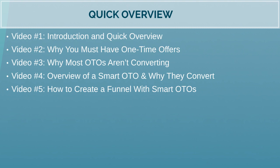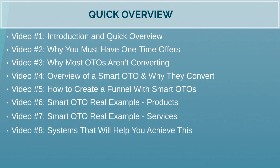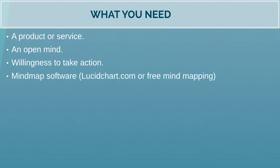Video six will cover different examples — we'll look at smart one-time offer real examples relating to products. Video seven will do something similar but relate it to services, so whether you have a product or a service you'll have a clear idea of what to do. Video eight covers different platforms and shopping cart systems that will help you actually build out the one-time offers. Now that you have a better idea of the course, here's what you need: a product or service, an open mind, and the willingness to take action.